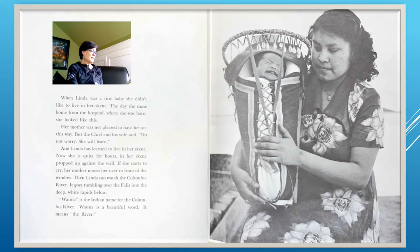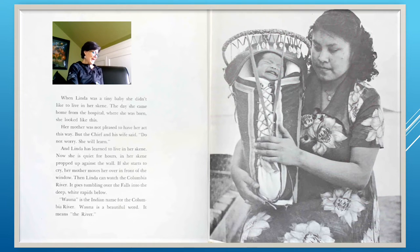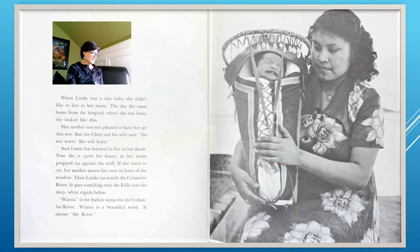When Linda was a tiny baby, she didn't like to live in her skein. The day she came home from the hospital, she looked like this — her mother was not pleased. But the chief and his wife said, 'Do not worry, she will learn.' And Linda has learned. Now she is quiet for hours in her skein propped up against the wall. If she starts to cry, her mother moves her in front of the window so Linda can watch the Columbia River tumbling over the falls. The Indian name for the Columbia River is Juana, meaning 'the river.'